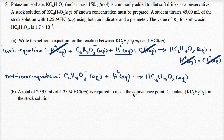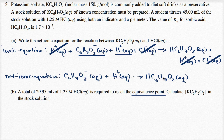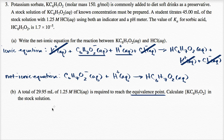Let's remind ourselves what the equivalence point is. The equivalence point is the point at which all of the potassium sorbate has reacted with the acid — with the titrant — so we have gotten to the right-hand side of this net ionic equation. Because we are reacting for every mole of potassium sorbate that we want to turn into sorbic acid, we're adding a mole of the hydrochloric acid, so they can completely cancel out with each other.